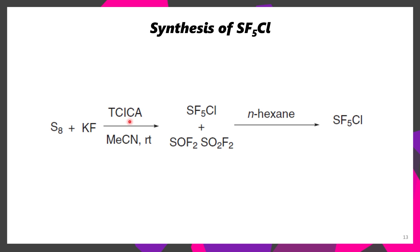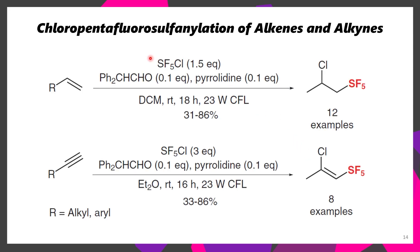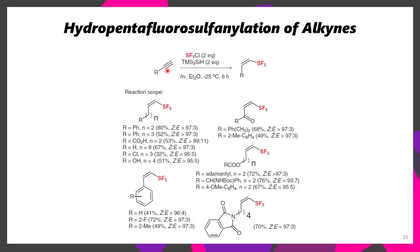Because this affords a mixture of SF5Cl, sulfuryl fluoride, and sulfonyl fluoride, it's necessary to extract with hexane in order to get the desired product. SF5Cl can undergo chloropentafluorosulfonylation of alkenes as well as alkynes. You don't always want that chlorine there, so people have developed some chemistry to get rid of it, but there is established photochemistry to add SF5Cl to alkenes and alkynes. If you add this to an alkyne and you want to reduce it, you can use tris(trimethylsilyl)silane — that reagent we also talked about earlier — and this adds in a hydrogen instead of your chlorine.